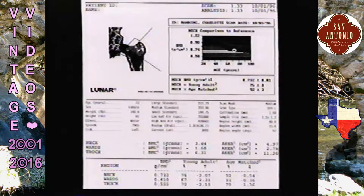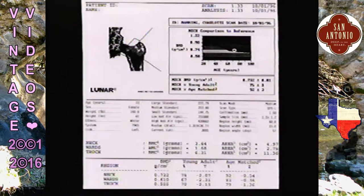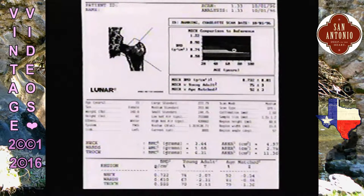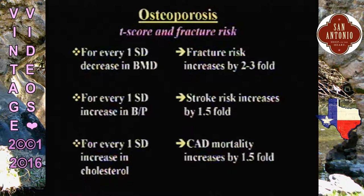Likewise we measure the hip. We usually do a total hip, though you can concentrate on the femoral neck where most fractures occur. Total bone mineral density measurement is more important for follow-up comparisons because measuring more points gives better reproducibility. How does this correlate with fractures? For every standard deviation down, your risk of fracturing increases by two to three fold.